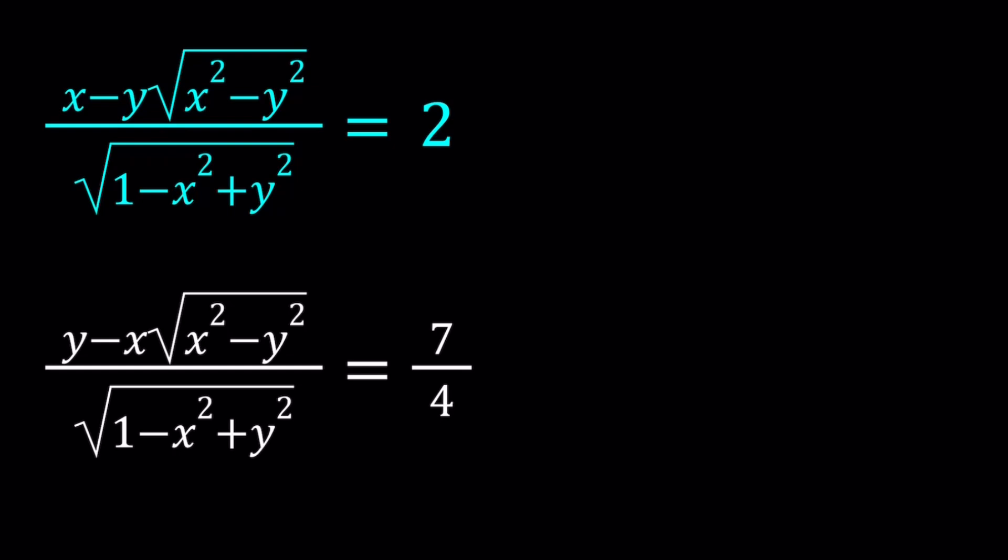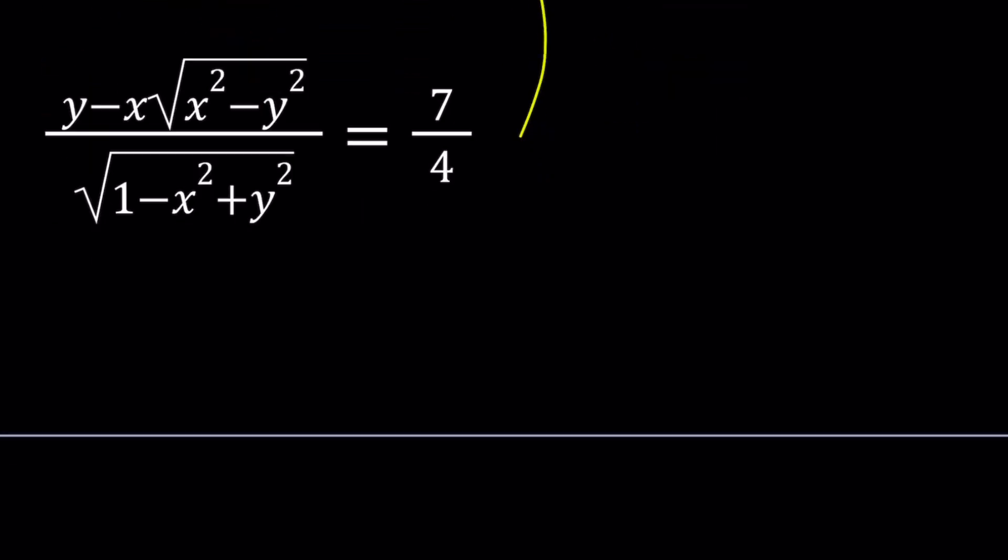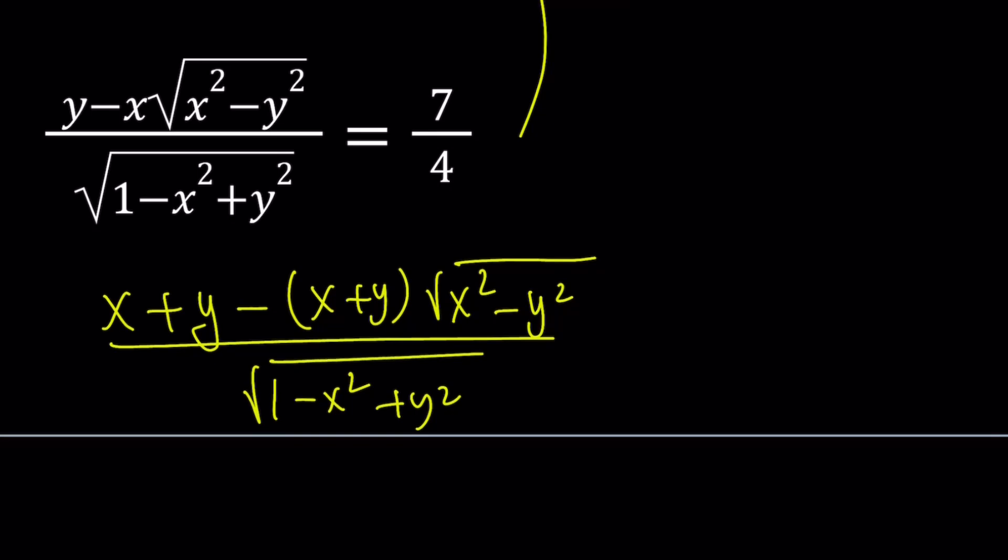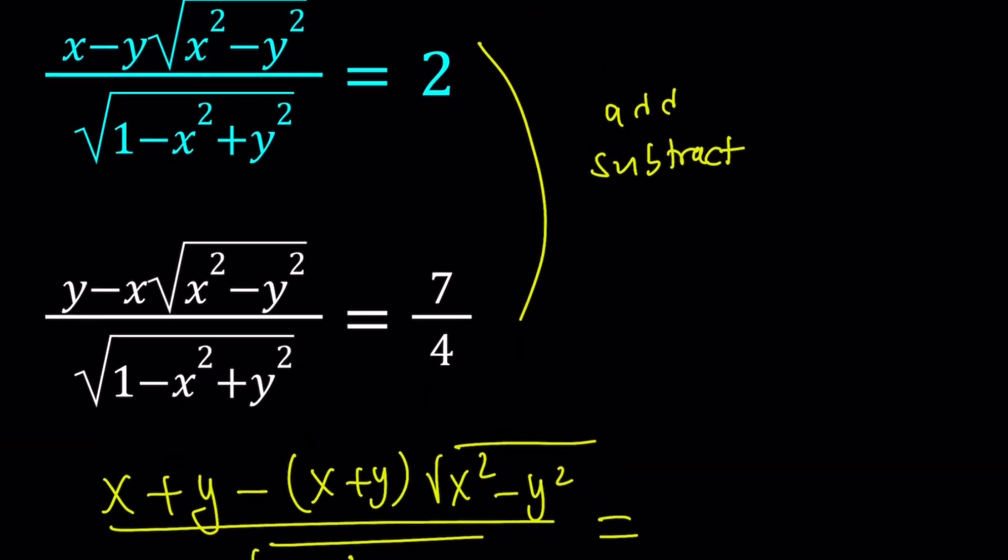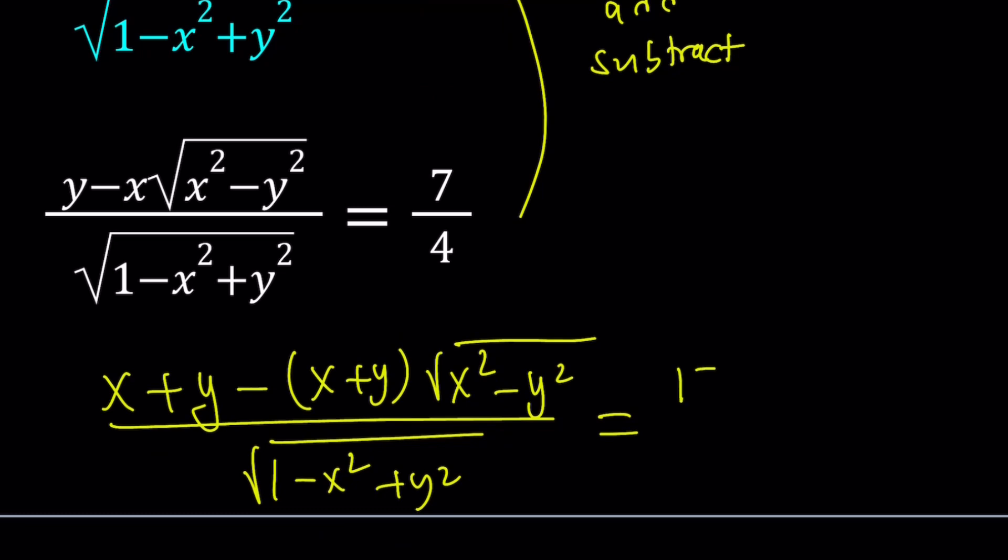But let's go ahead and apply the same procedure. This time, I'm going to simplify in a much easier way. It's not going to take that long, hopefully. So first of all, I'm going to add these equations, and then I'm going to subtract these equations. If you add these two equations up, hopefully you notice that you're going to get X plus Y. And then you're going to get minus X plus Y times the quantity. And then that will be divided by the common denominator. And that is going to equal 2 plus 7 over 4, which is equal to 15 over 4.